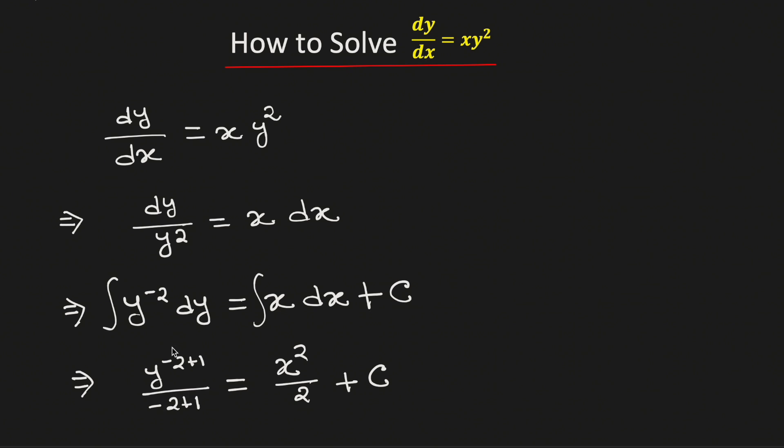Now if we simplify it, we will get minus 1 over y is equal to x² divided by 2 plus integration constant c.